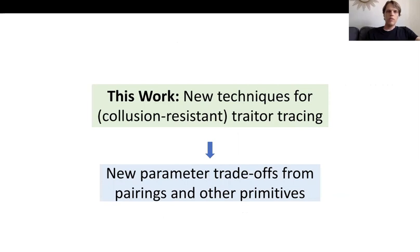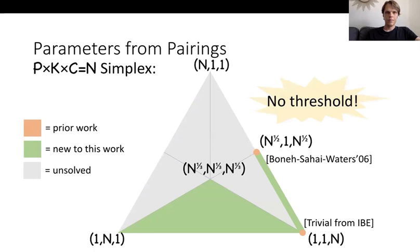In this work, we offer a handful of new techniques for traitor tracing outside of the private linear broadcast encryption paradigm. This allows us to circumvent the n^(1/2) barrier and get new parameter trade-offs from pairings as well as a few other results from other primitives. Briefly summarizing our results from pairings: our traitor tracing results will generally have the form where the public key times the secret key times the ciphertext size equals N. In other words, if you look at the exponents of N for the public key, secret key, and ciphertext size, those exponents sum to one.